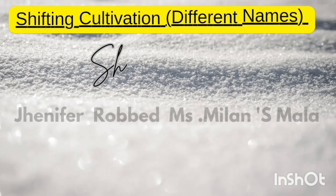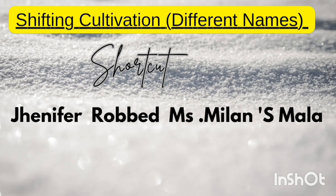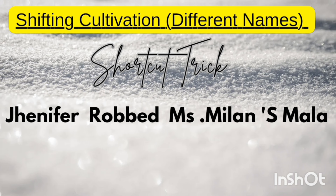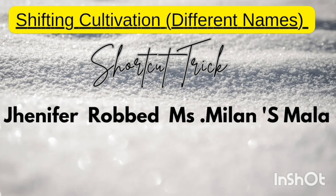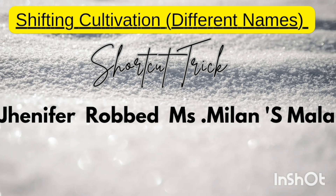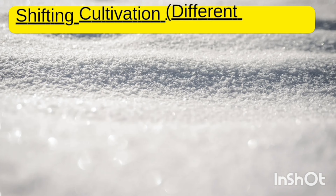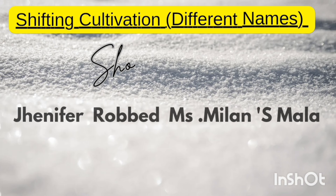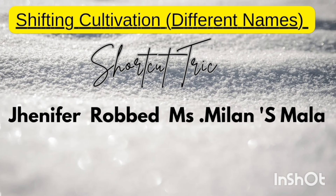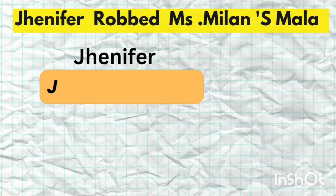The shortcut sentence is: 'Jennifer robbed Miss Millen's Mala.' Using this one sentence, you can write all the names of shifting cultivation easily. Let's see what it means.